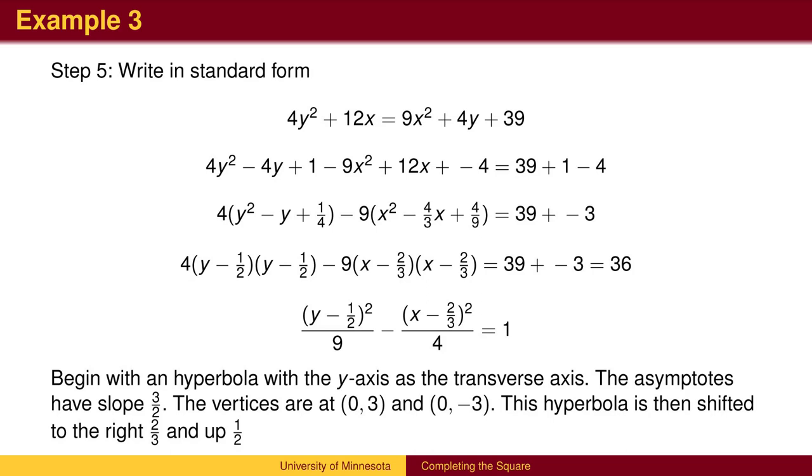Since the y term is positive, the vertices are on the y-axis at 0, 3 and 0, negative 3. We can then shift this hyperbola to the right 2 thirds and up 1 half.